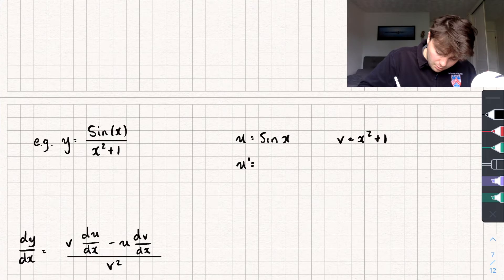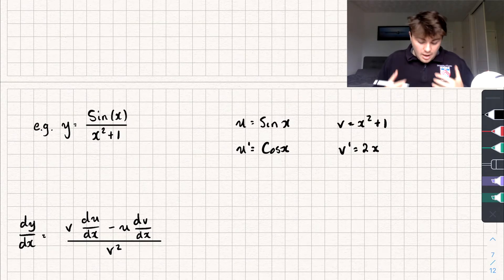So let's find the derivative of u. That's just equal to cos of x. And the derivative of v is just going to be 2x. And so now I'm just going to substitute everything I know into the quotient rule to find dy/dx.